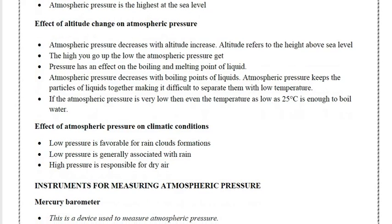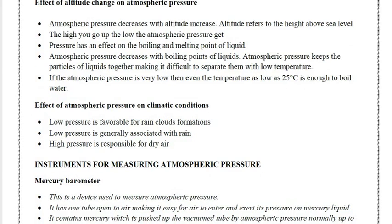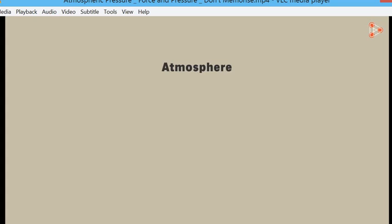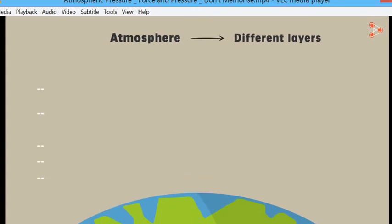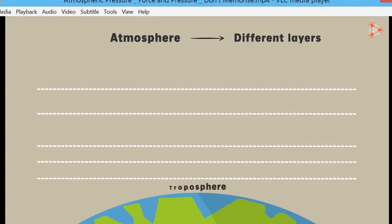The subheading is the effect of altitude change on atmospheric pressure. You observe that if you go to places that have high altitude or places that have very low altitude, the atmospheric pressure is going to be different. If we look at the atmosphere, we know that it is divided into five layers.